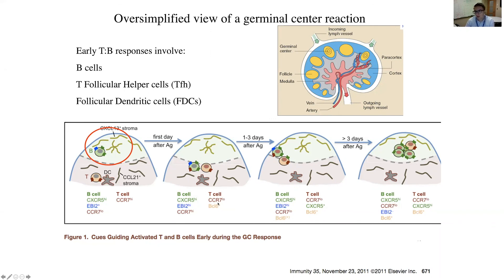T cells downregulate CCR7, pushing them away from the T cell zone, and upregulate CXCR5, allowing entry into the B cell follicle to interact with B cells in the germinal center. Early B cell responses require B cells, T follicular helper cells — which gain access to the B cell follicle — and follicular dendritic cells. Follicular dendritic cells are actually stromal cells with dendrites, not classical hematopoietic dendritic cells — an unfortunate naming convention.